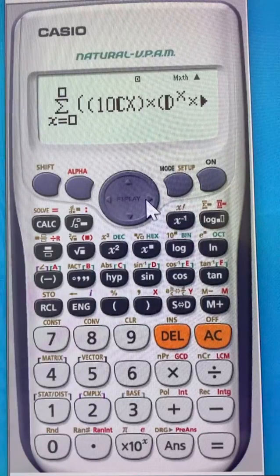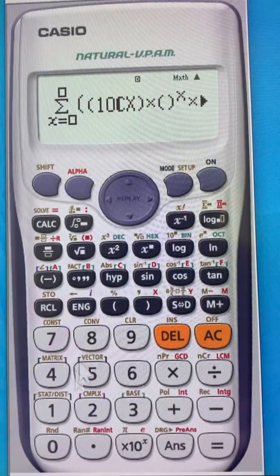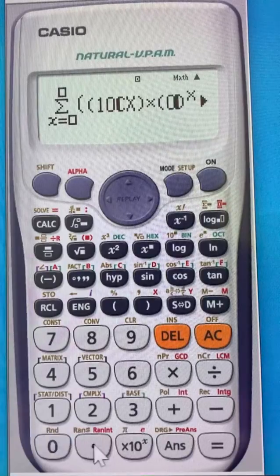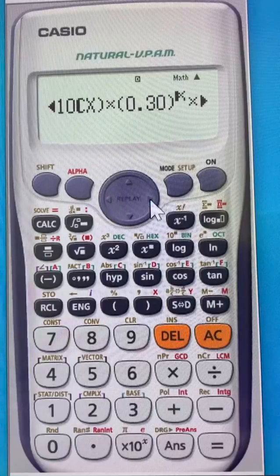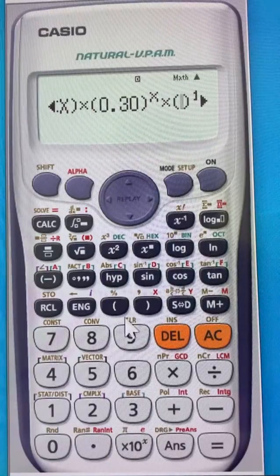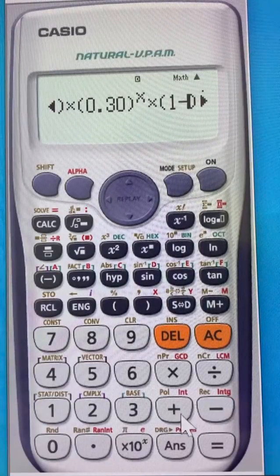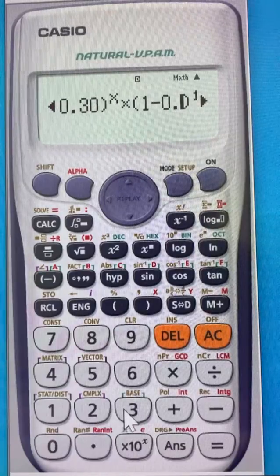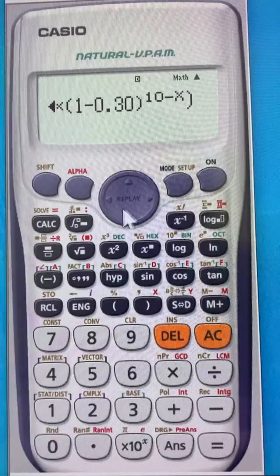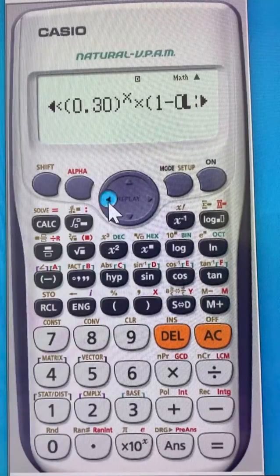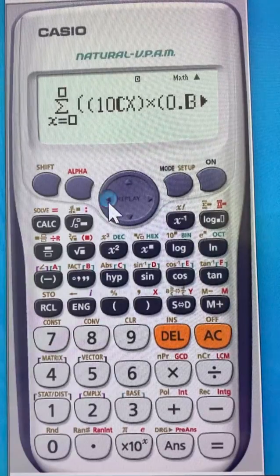And here you put P, the probability of success. We said that it's 30%, so you put 0.30. And then go to the last parentheses and put 1 minus P, so 1 minus 0.30.